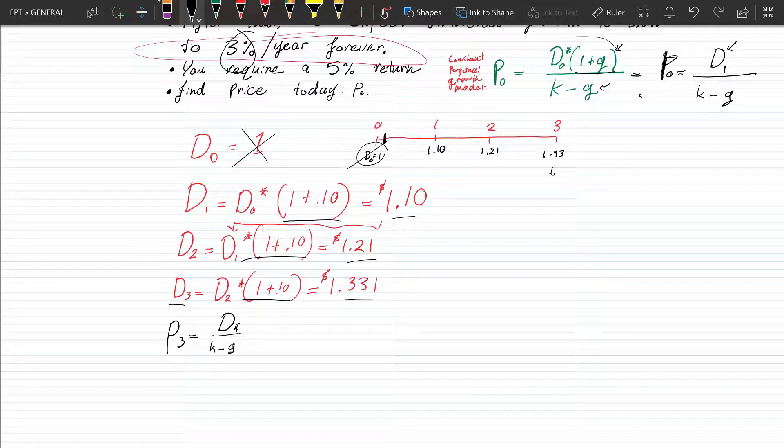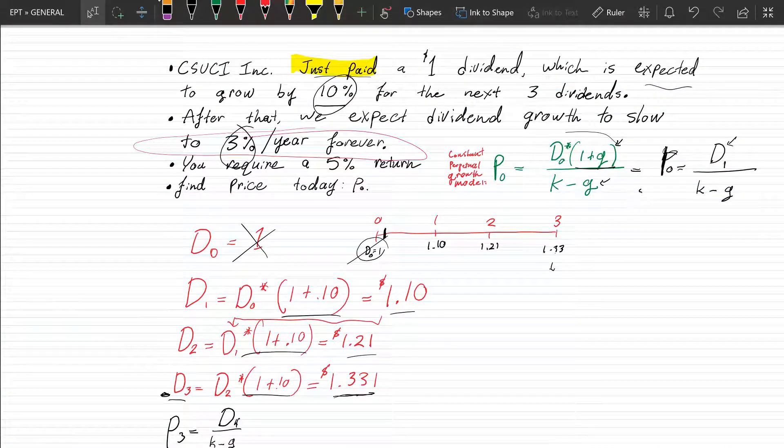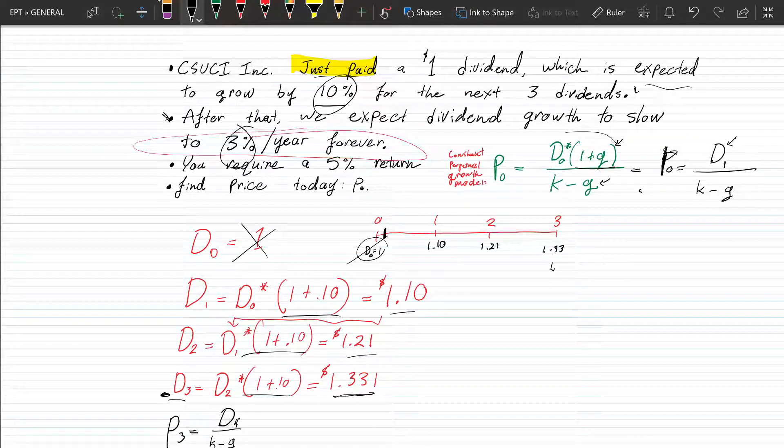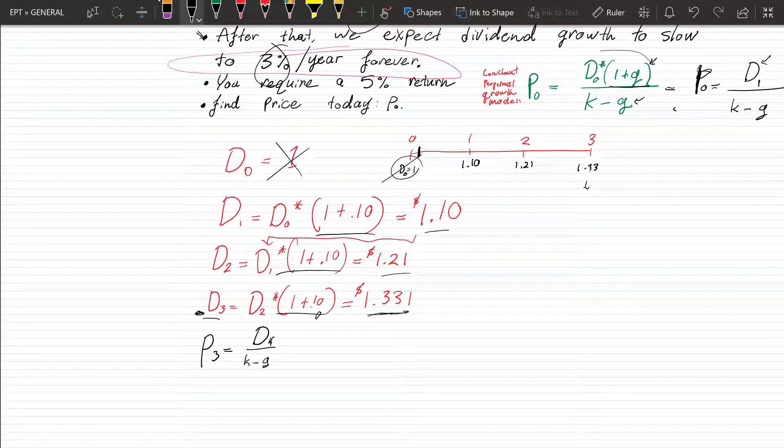Well, dividend four we know is just D, dividend three times the growth rate, right? Well, the growth rate right now from, on from period three, remember? The growth rate after that, so right here is where we see for the next three dividends. So we have finished that third dividend and we finished the growth of 10% right here. Now, now that we're going to,